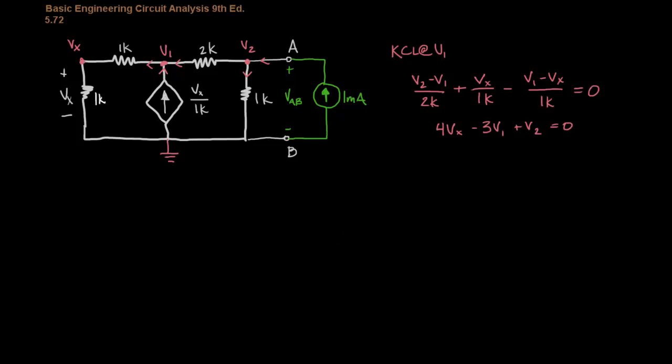Let's do KCL at V2 now. And we have 1, we'll say that going in is positive, so 1 milliamp, and everything else is going out of the node. So, that's going to be minus V2 minus V1 over 2K, and minus V2 over 1K.